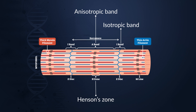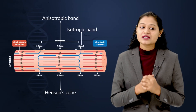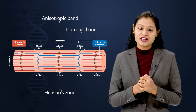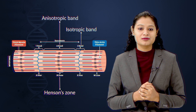Each sarcomere will have half an I band, a full A band, and another half I band. You cannot collectively combine the two half I bands because they are present on either side of the A band. This is how we understand the structure of the sarcomere.